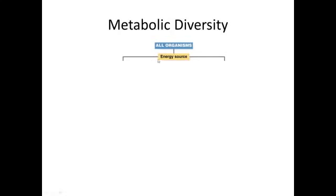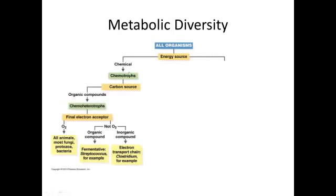All organisms have to have an energy source. They have to get energy from some place. Let's talk about the organisms we're familiar with, those that use chemical energy to get their energy. We call them chemotrophs. Chemo for chemical, trophs for eating. They get their carbons also from chemicals. In other words, they don't get it from CO2. So organic compounds provide energy, and they also provide their carbon. And we call them chemoheterotrophs. You are a chemoheterotroph. The E. coli in your gut are chemoheterotrophs.